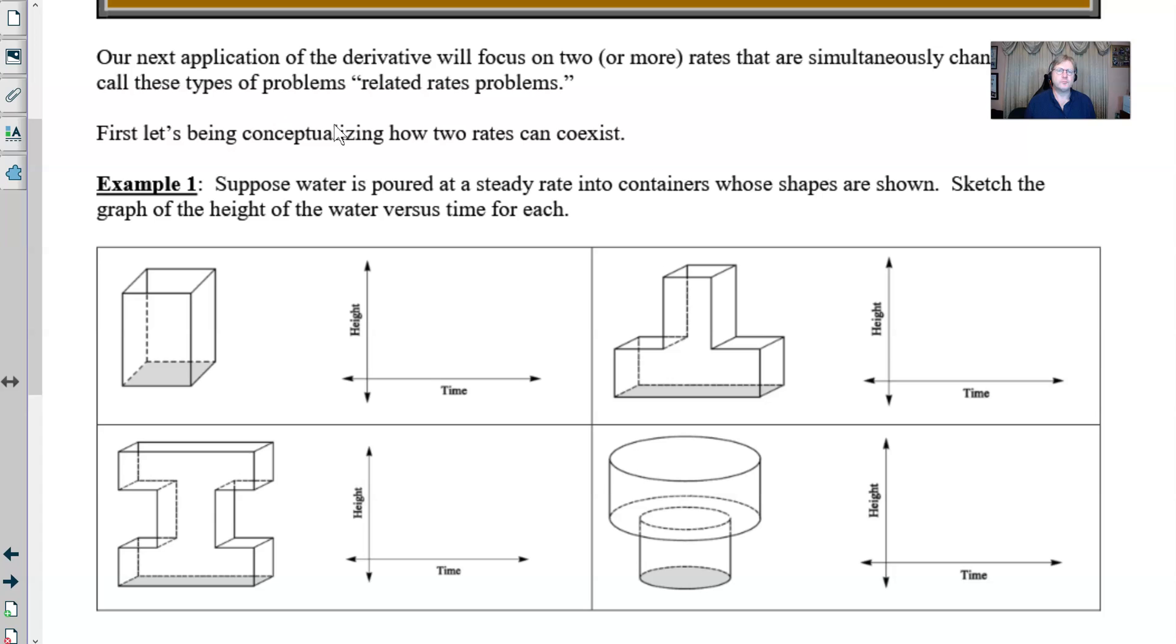And so the two rates that we have are the volume that's accumulating in the container as water is being poured and then the height that's changing as that volume changes. Now you'll notice that I don't have any of the scales on the x nor y-axis because it's not important. I don't want this to be a perfect rendition. I just want the shape to depict what's happening.